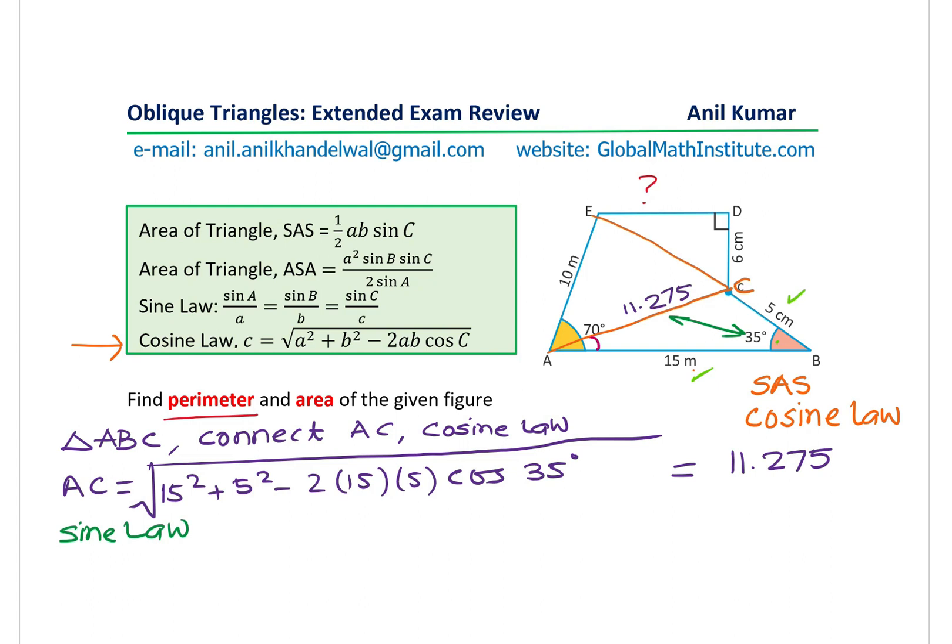We'll use the sine law and find the angle. So we can say sine of the angle, which is CAB, over the side opposite, which is 5, that should be equal to sine of the known angle 35 degrees over the side which we just found, 11.275. So from here, we can say that the angle CAB is equal to sine inverse of all this, which is 5 over 11.275 times sine of 35 degrees.